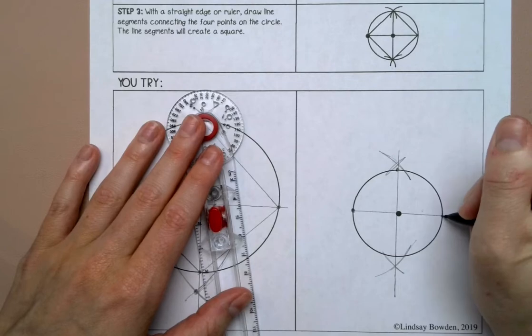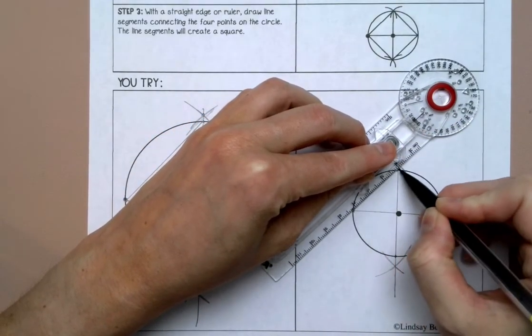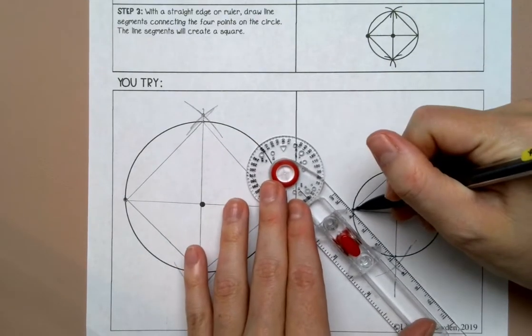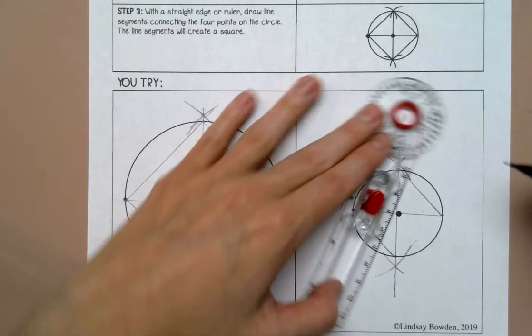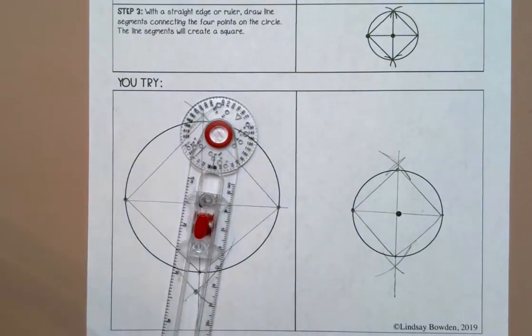And then I will connect these four points to make the square. All right, I'm going to make sure I have the edge right now.